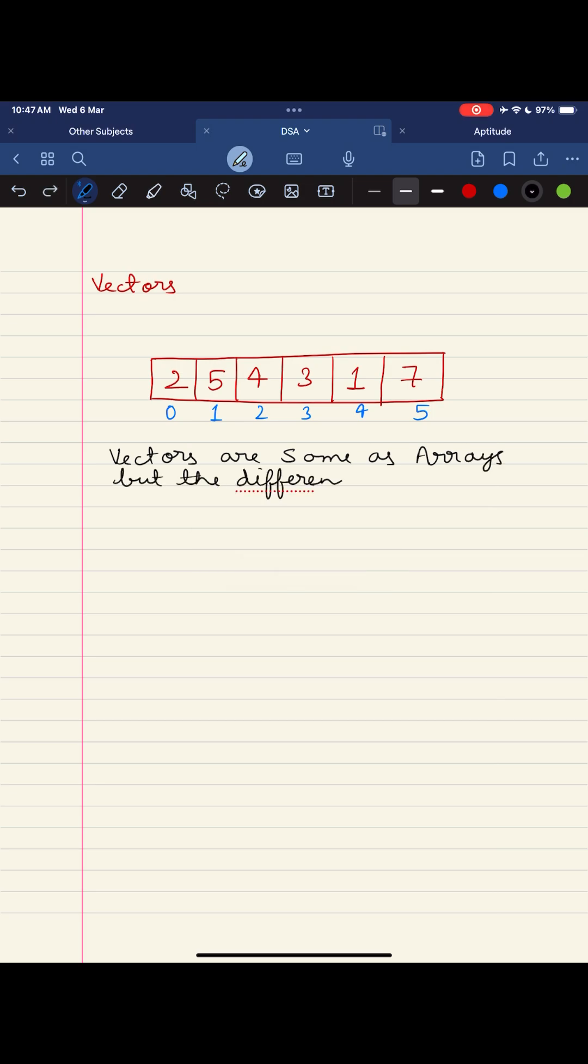Arrays are static containers with fixed sizes, requiring you to specify the number of elements they will be holding at the time of declaration. On the other hand, vectors are dynamic arrays that can resize themselves as needed.